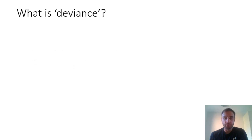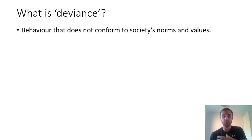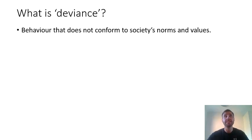So deviance. Deviance is a little bit different to crime — what is deviant isn't always what is criminal. Deviance is any behaviour that does not conform to society's norms and values. If you think back to lesson one of sociology in year nine, you looked at culture, norms and values. The norms and values are the things that society holds important and the expected behaviours within that society. If you are performing any deviant act, you're performing an act which goes against what is considered normal in society.